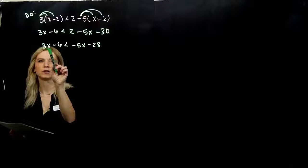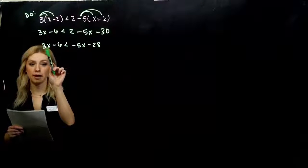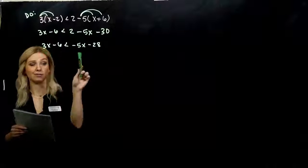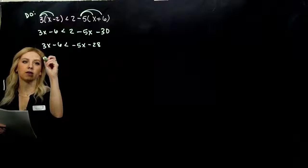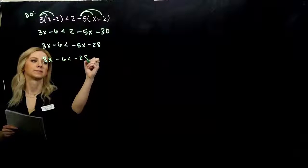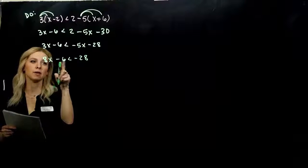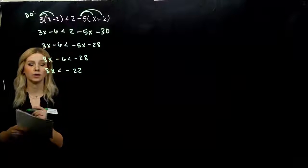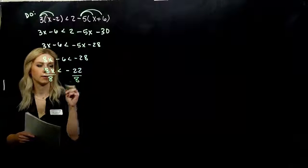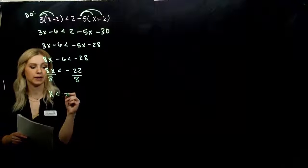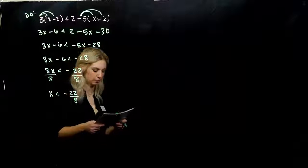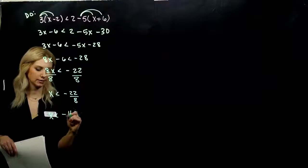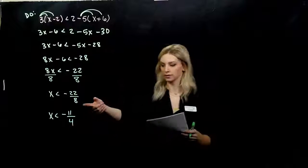Now we can combine our like terms over on the right — I've got minus 30 and 2, so I'm looking at minus 5x minus 28. I'm working towards keeping my coefficients positive. Should I move 3x over here or 5x to the left? 5x to the left, because it will be positive over there — I've got 8 of them if I add 5x to both sides. I need it on its own, so I add 6 to both sides, leaving minus 22. So I divide by 8 — positive on both sides, no need to flip any signs. Simplify 22 and 8 by a factor of 2, leaving minus 11 over 4.